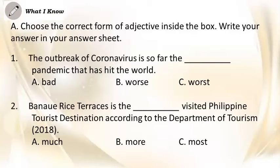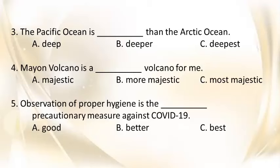B. more, C. most. 3. The Pacific Ocean is blank than the Arctic Ocean. A. deep, B. deeper, C. deepest. 4. My own volcano is a blank volcano for me. A. majestic, B. more majestic, C. most majestic. 5. Observation of proper hygiene is the blank precautionary measure against COVID-19. A. good, B. better, C. best.